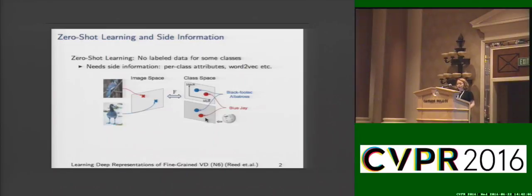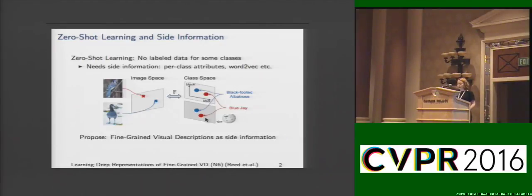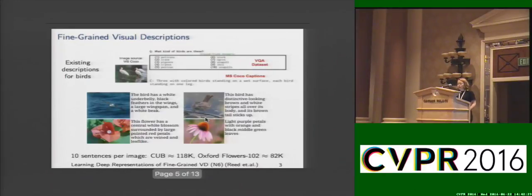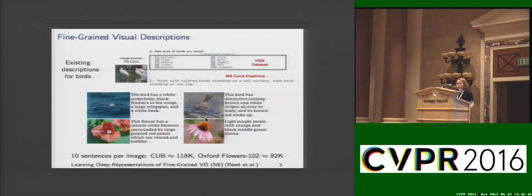Attributes are useful for this task, but they don't provide a natural language interface for the model. So we propose to use fine-grained visual descriptions as side information. When we look at the existing datasets that include bird images, the sentences that come with them are not very detailed, so we may not be able to use them for classification. Therefore, we decided to collect our own sentences corresponding to images in the Caltech UCSD birds dataset and Oxford flowers dataset. These are very detailed sentences — ten sentences per image — annotated using Amazon Mechanical Turk.